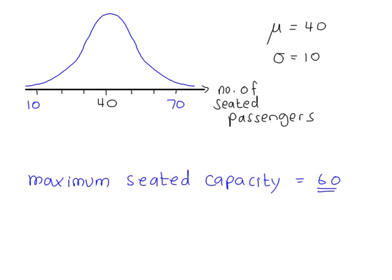Clearly, from the sketch here, you have the normal distribution giving you a probability here that you have more than 60 seated passengers. So, the normal distribution, in this instance, would be unsuitable. I mean, that's one reason.